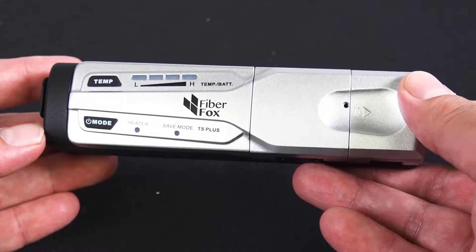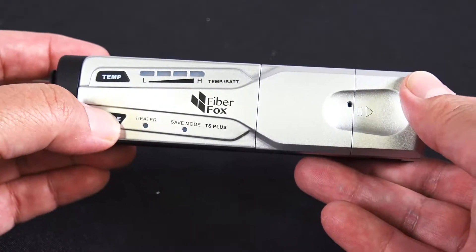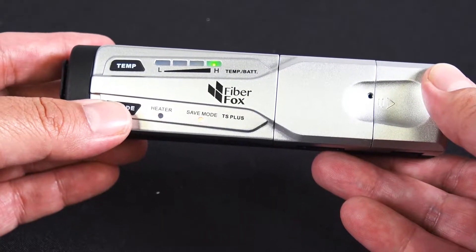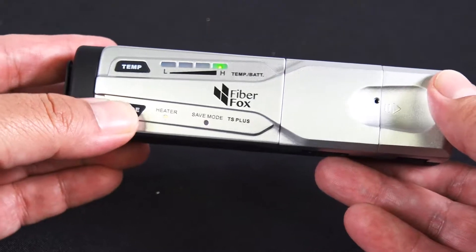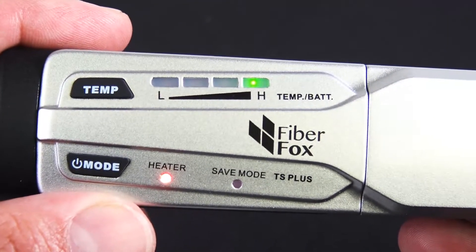First you want to turn on the heating stripper and set the right mode and temperature. So you want to go ahead and press that button right here. There we go. And you want to make sure that the heater is turned on right there.